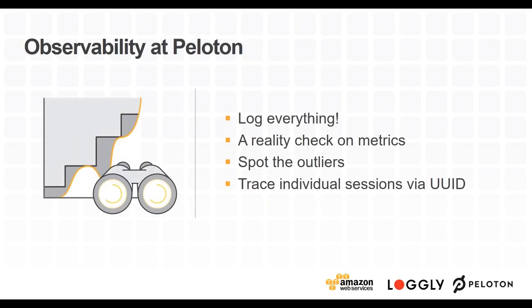Our practice of logging everything lets us reality-check metrics. Spotting outliers is really valuable. Loggly actually supports anomaly detection in their logging system, which is really powerful — almost all monitoring platforms are now looking at anomaly detection. Loggly also offers derived values, another interesting feature. A key to tracing things through our system is that pretty much every request travels with a UID, which has been really valuable.